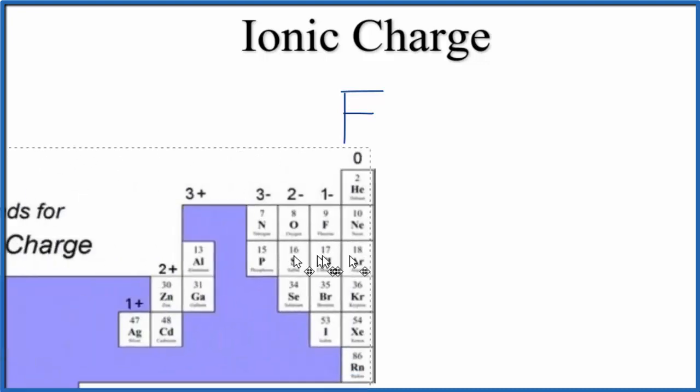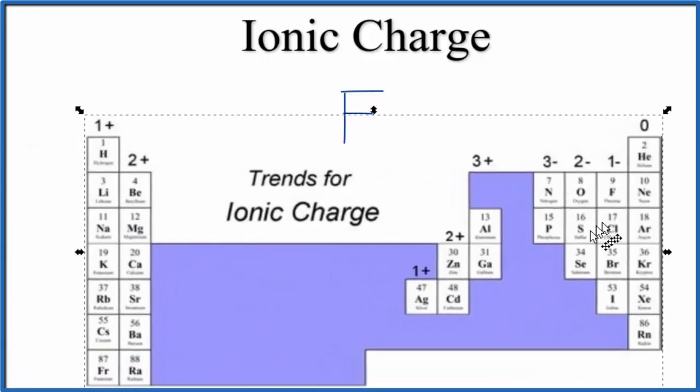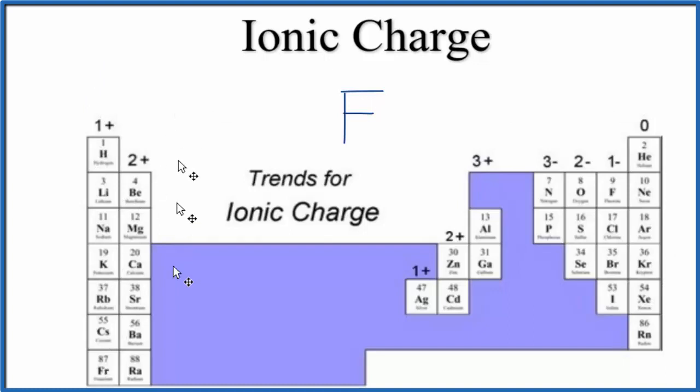Let's take a look at the periodic table here. We can see from the periodic table that we have these trends for charge. Group 1, 1 plus. Group 2, they're all 2 plus.